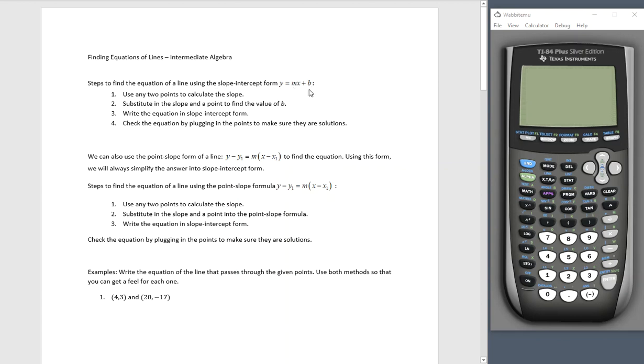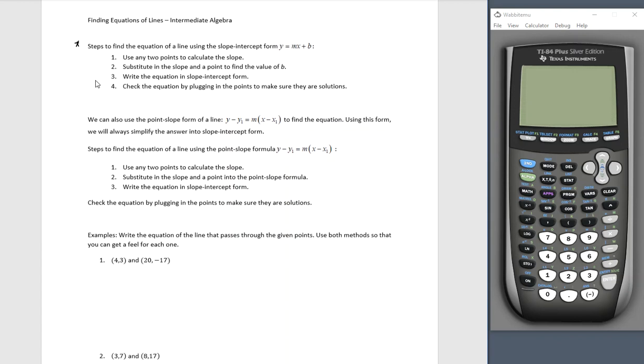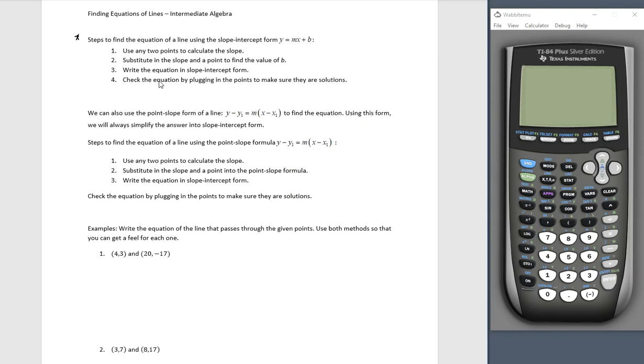Remember m is the slope, b is the y-intercept. We could use any two points to calculate the slope first step. Substitute in the slope and a point to find the value of b, write the equation in slope-intercept form, and then check by plugging in the points to make sure they're solutions.